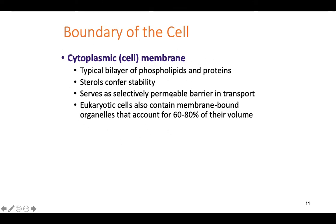The cell membrane in eukaryotes is the exact same thing as in prokaryotes — that double layer of phospholipids, heads and tail regions. You'll have proteins embedded in it for support, and sterols that allow the cell membrane to have fluidity while remaining stable. They are selectively permeable, allowing osmosis and diffusion to occur — some things flow through easily, some things have to be brought in using energy and specialized proteins.